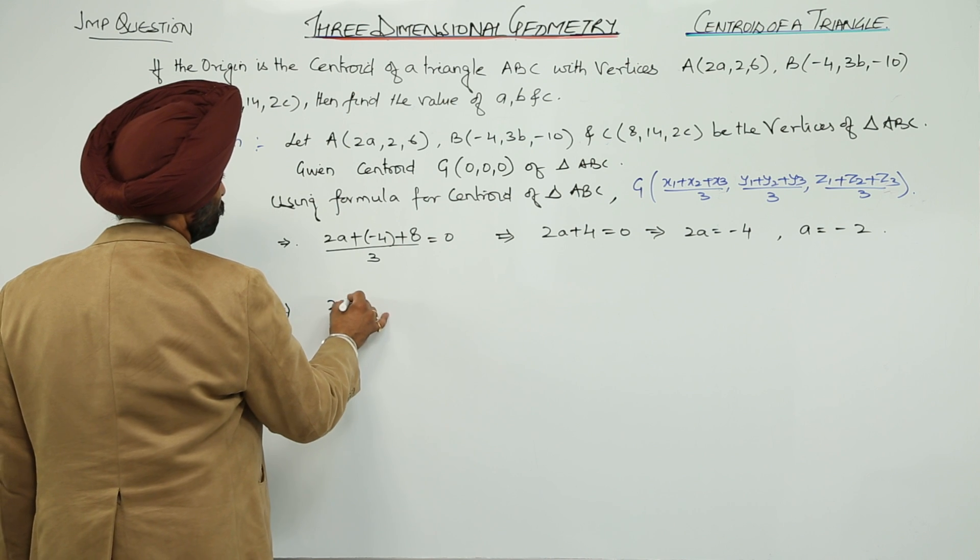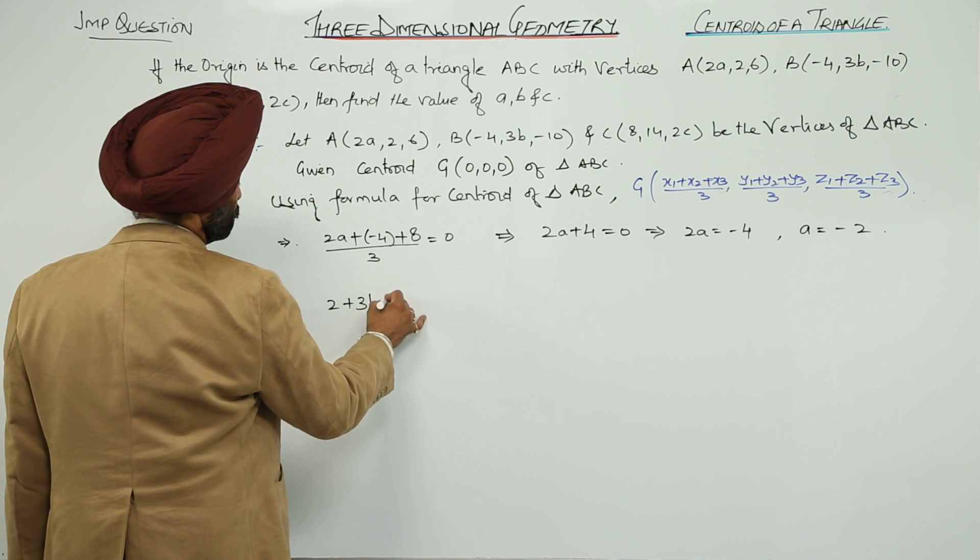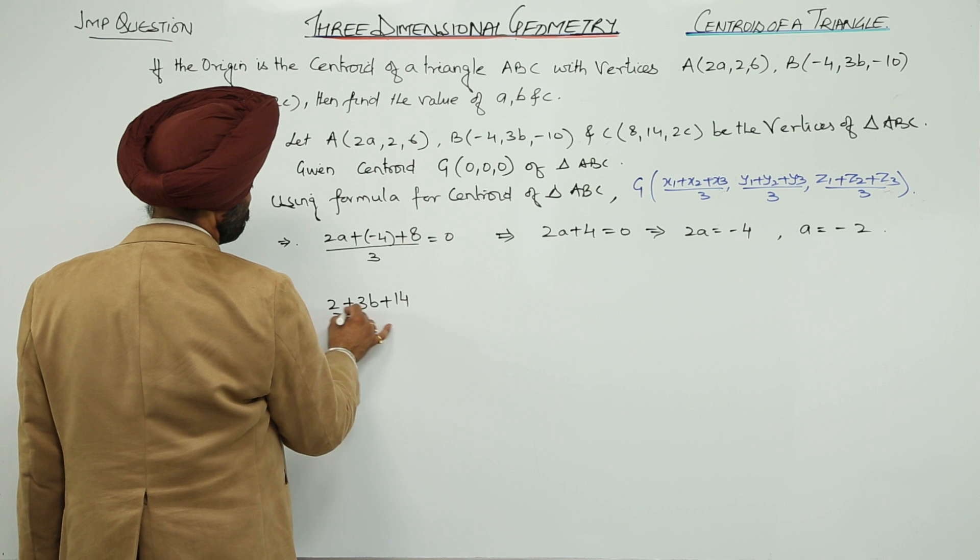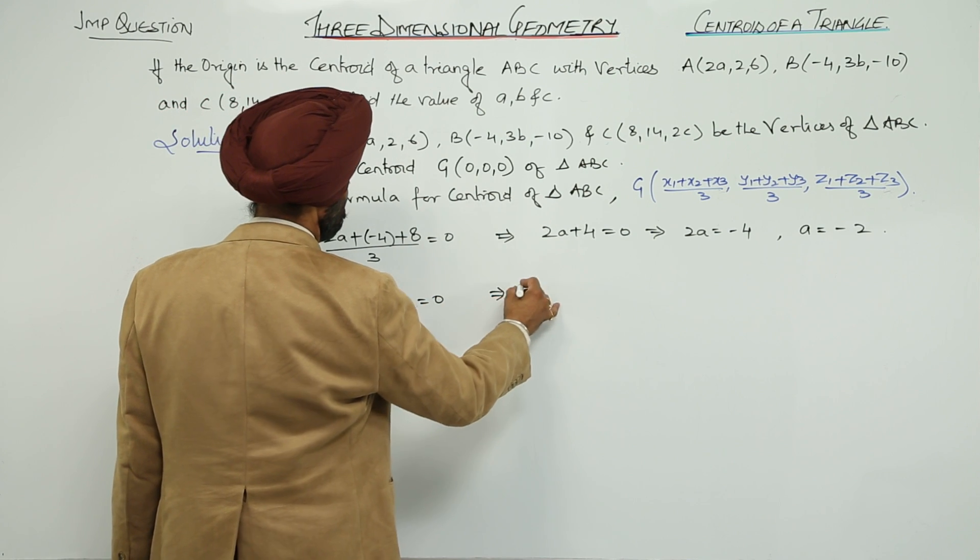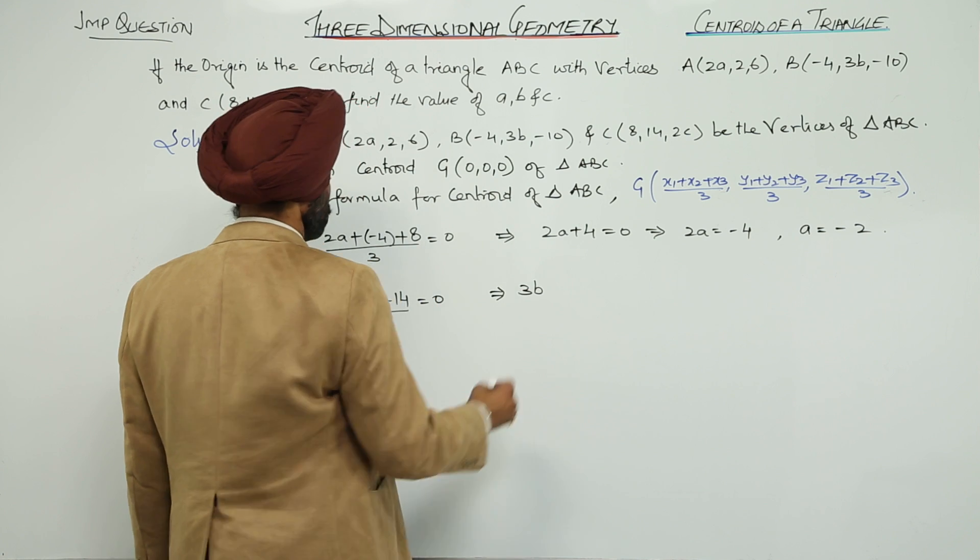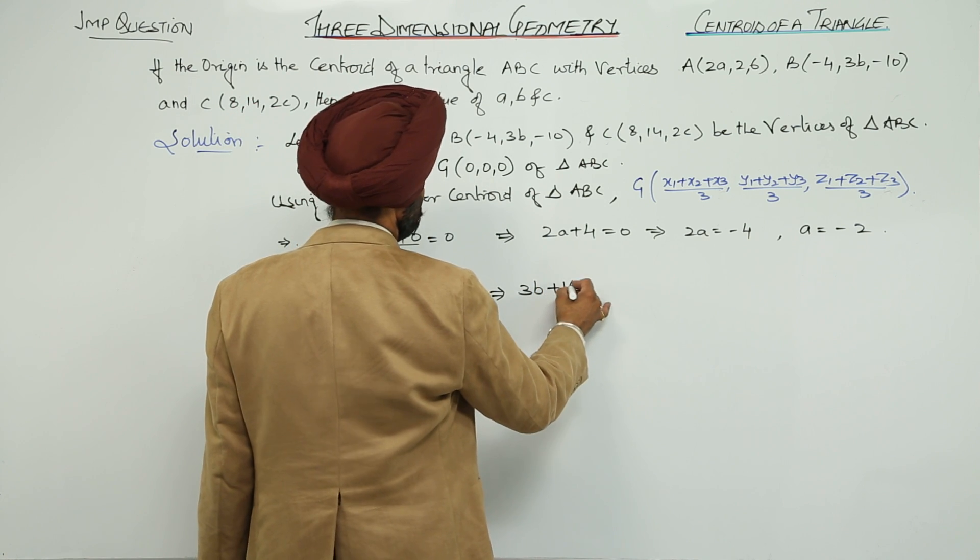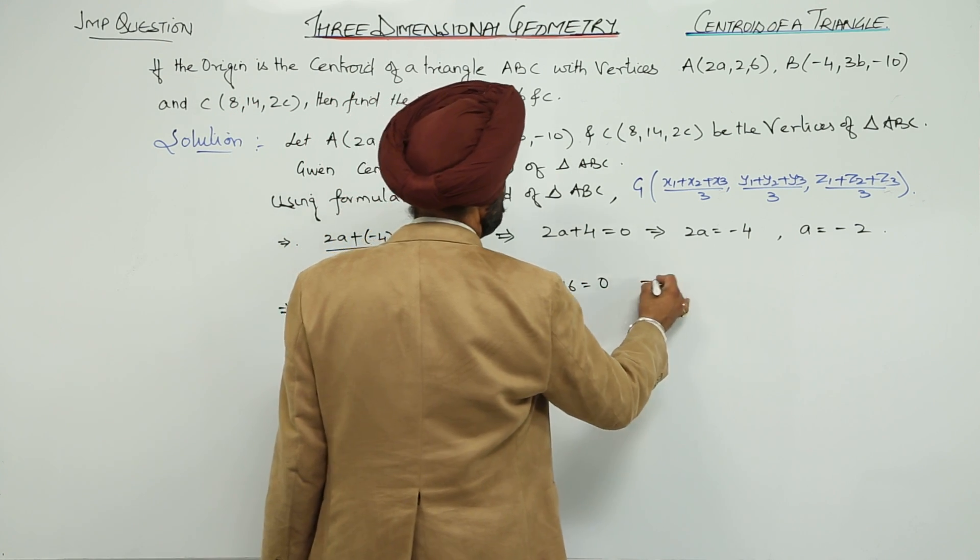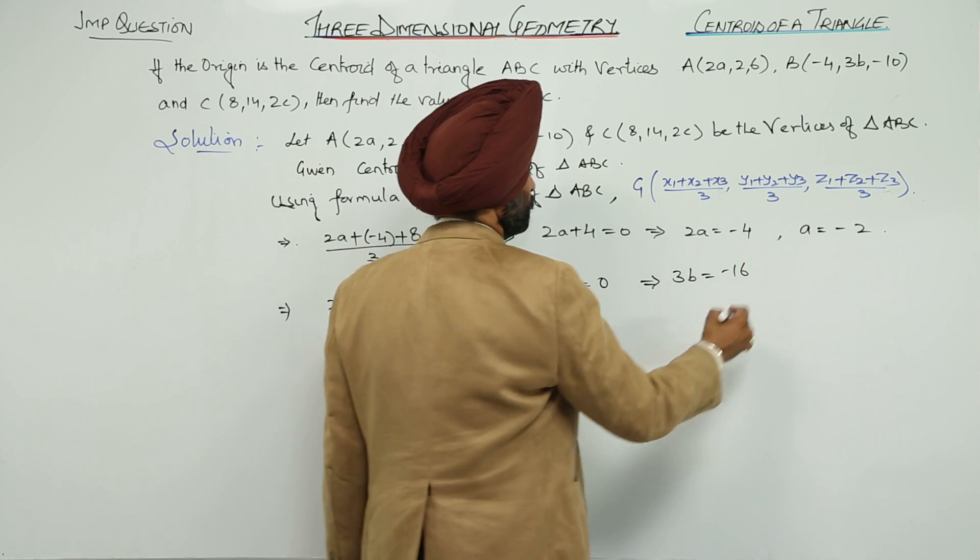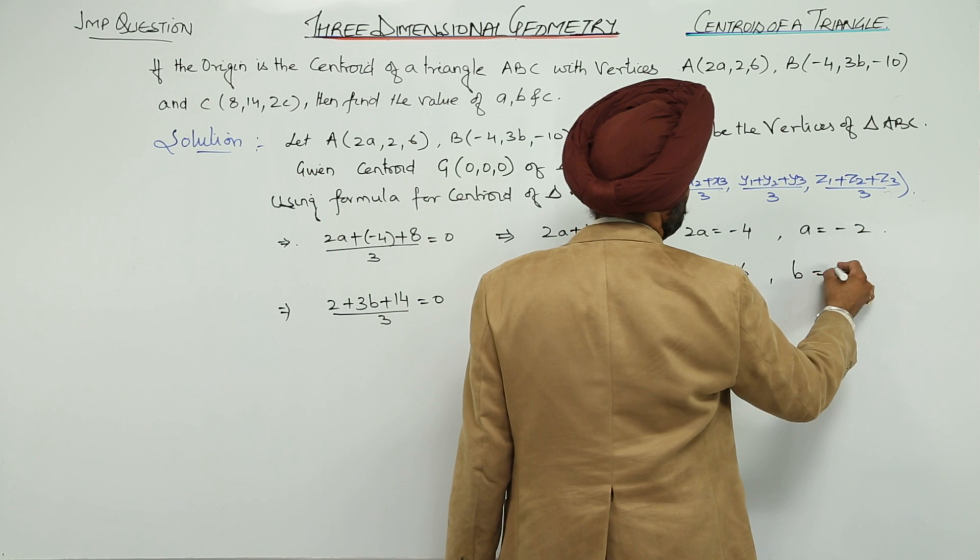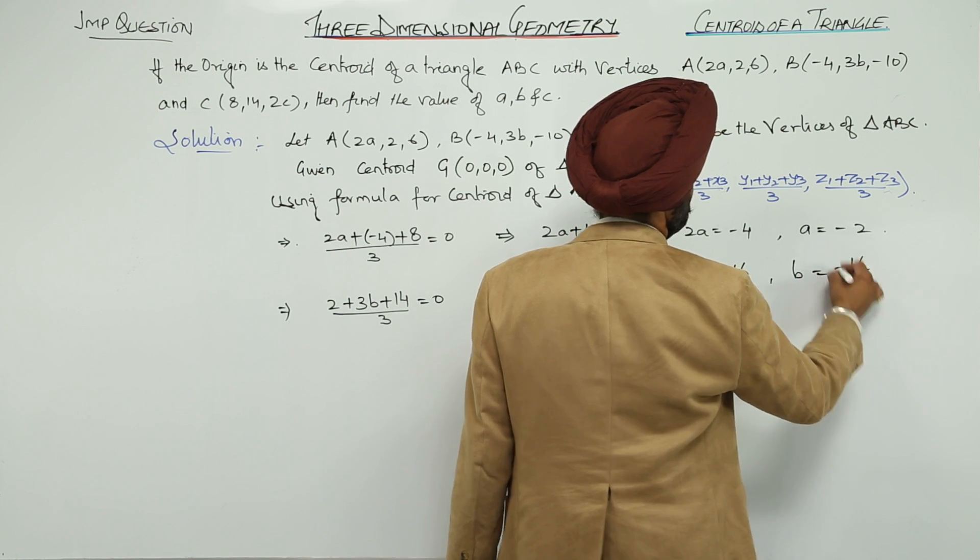Then, (2 + 3b + 14)/3 = 0, so 3b + 16 = 0, giving 3b = -16, therefore b = -16/3.